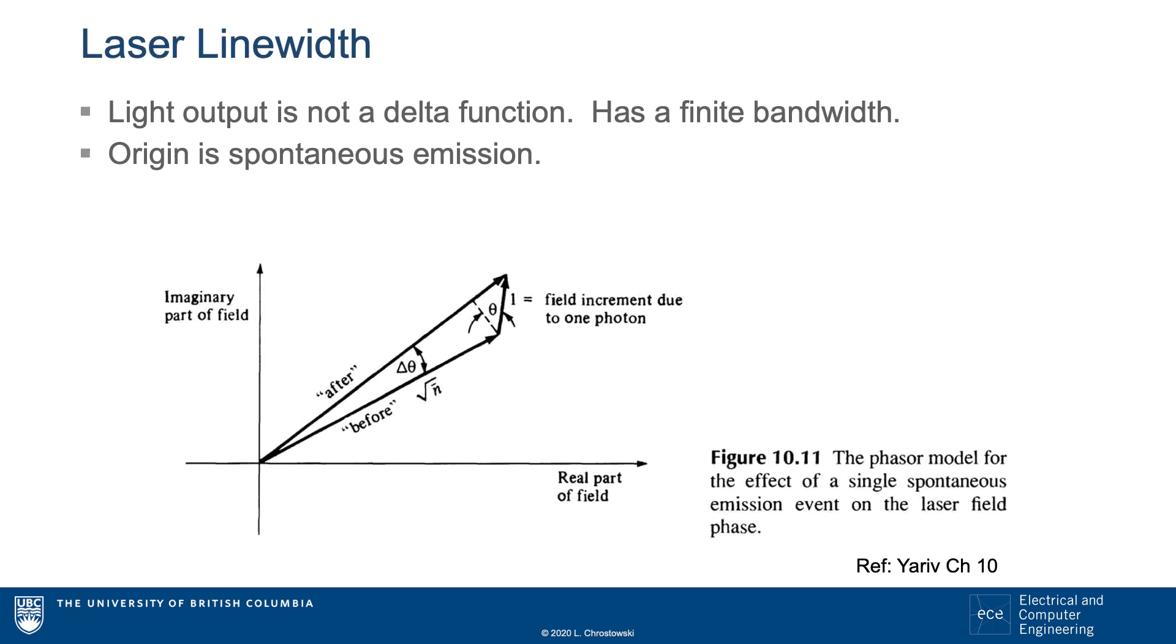First, let's describe the origin of linewidth in a laser. We consider a phasor diagram where we plot the real and imaginary parts of the laser's electric field, and where we have removed the oscillations from the carrier.